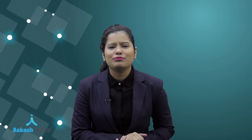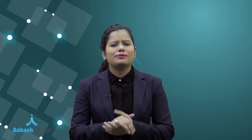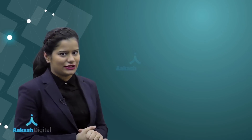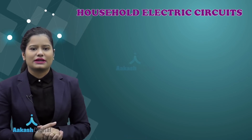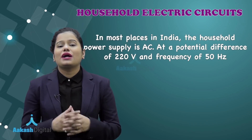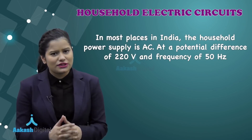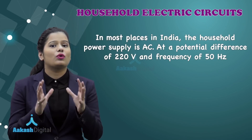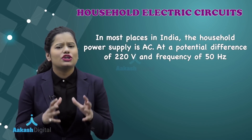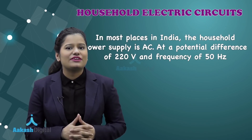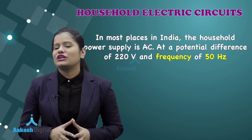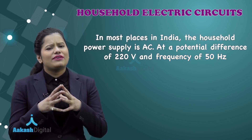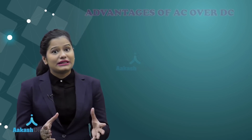This is the time to wind up this long video lecture. Let's write down the key points of today's discussion. Today we talked about household electric circuits. In India, most of the equipment that we use in our houses actually works on alternating voltage — the alternating voltage that we receive is of the potential difference 220 volt and has a frequency of 50 hertz.